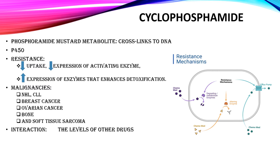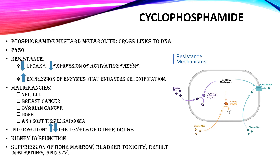Drug interaction is one of cyclophosphamide's potentially serious side effects. Cyclophosphamide can increase or decrease the levels of other drugs by interfering with their metabolism. Also, cyclophosphamide needs to be used with caution in patients with kidney dysfunction, and hence its dose needs to be adjusted in people with kidney issues. Other side effects include suppression of bone marrow, bladder toxicity that may result in bleeding, and nausea and vomiting.